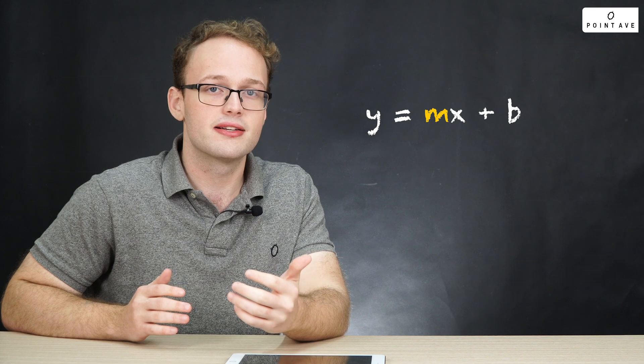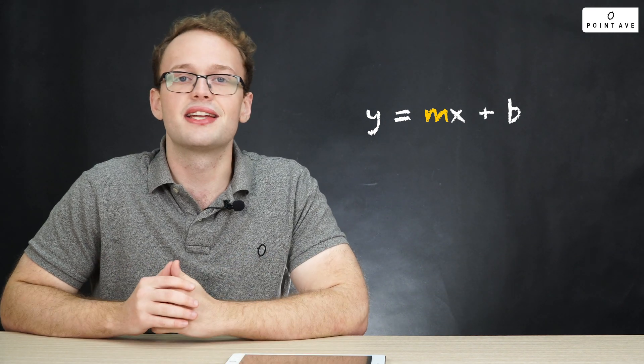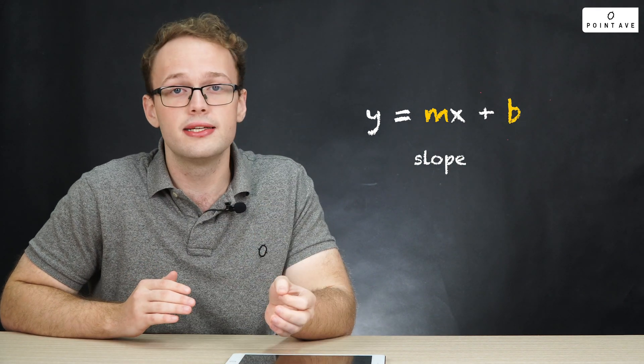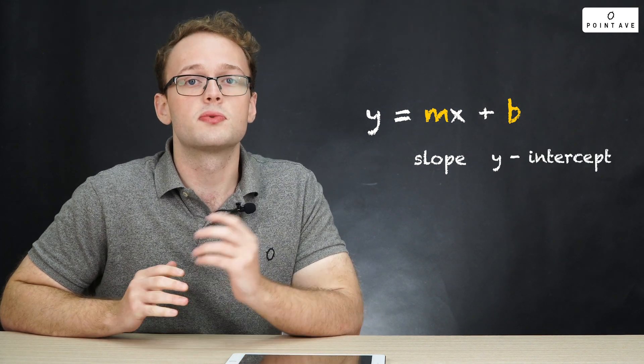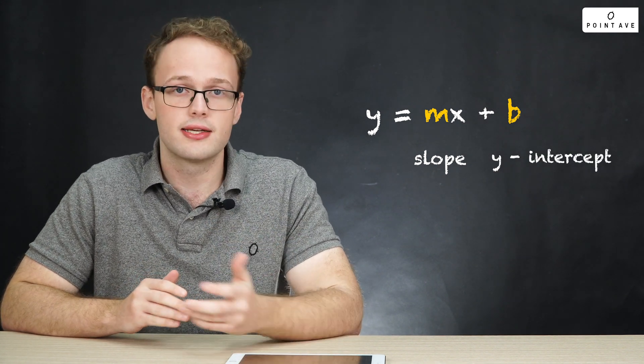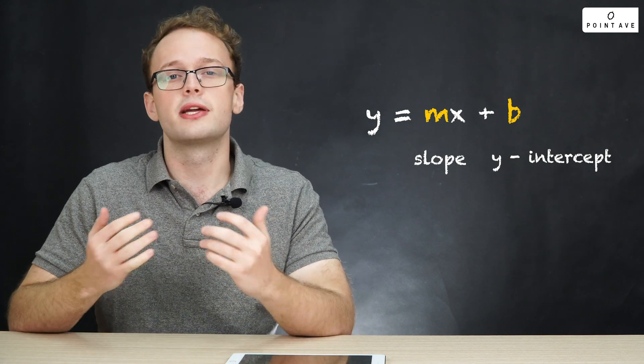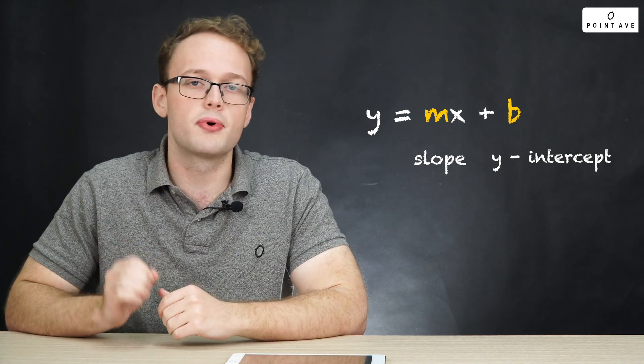Now the m here, even though it doesn't start with s, stands for slope and the b stands for y-intercept. Now the y-intercept is where the line crosses the y-axis and the slope defines the rate of change of the line, a very important concept.